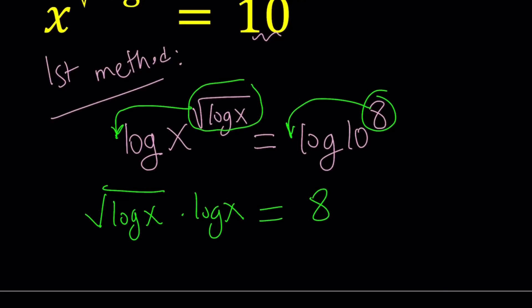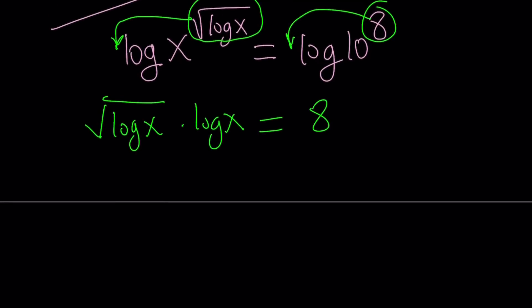So in other words, log is used for finding the exponent. So when you log 10 to the 8th, you're basically looking at the exponent, which is 8, because they have the same base. So now, we have something that should be familiar on the left-hand side. Something multiplied by its square root. So I can write this as log x to the power 3 halves, because square root of log x can be written as log x to the power 1 half. And 1 plus 1 half is equal to 3 halves. And this is equal to 8.